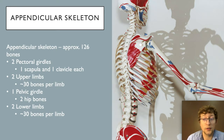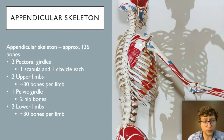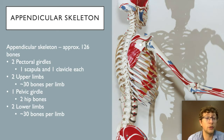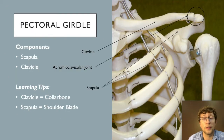In the previous class we started with the axial skeleton. Today we're continuing with the skeletal system, focusing on the appendicular skeletal system. The main components of the appendicular system are two pectoral girdles, two upper limbs, one pelvic girdle, and two lower limbs.